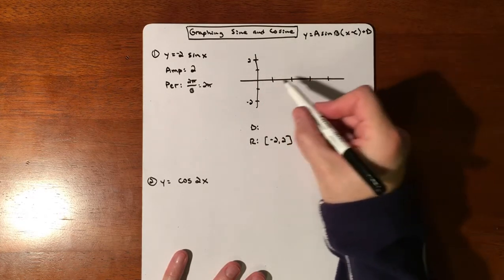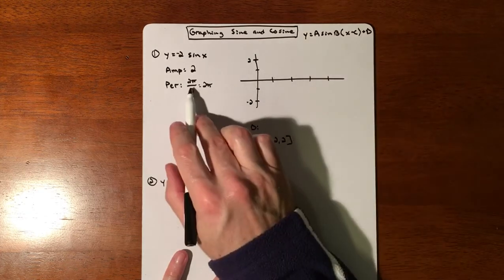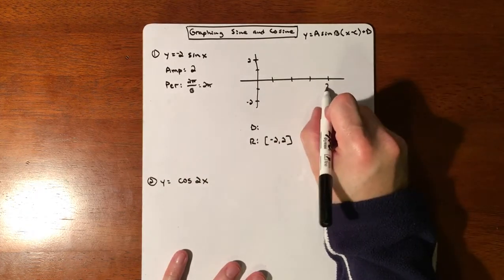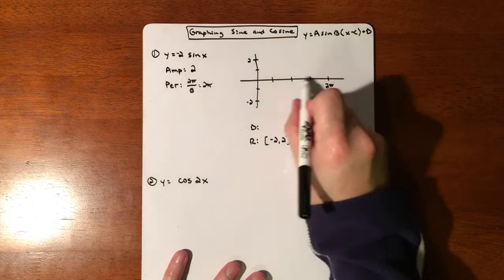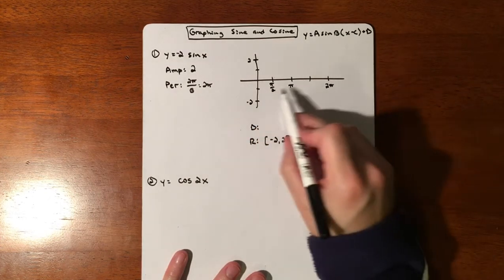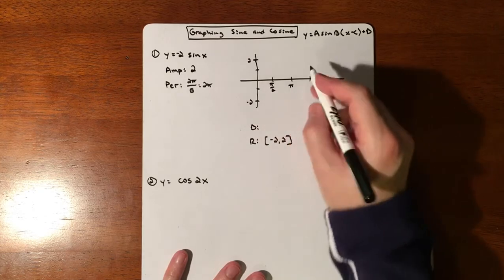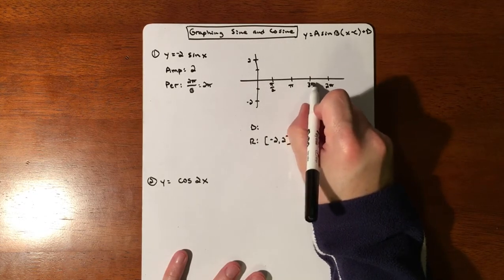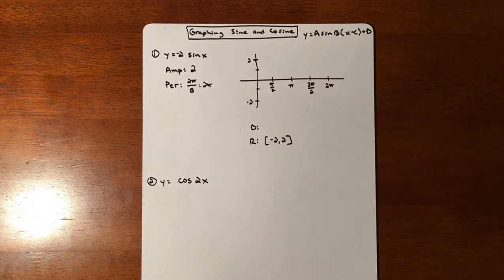So that tells me that my graph is gonna fluctuate—if we talk domain and range—we are gonna fluctuate between a negative 2 and a positive 2. Our period did not get affected, so that's gonna be a 2π right there. If we cut it in half, that's π. We cut it in half, that is our scale. So we're gonna go π, 2π, 3π over 2.